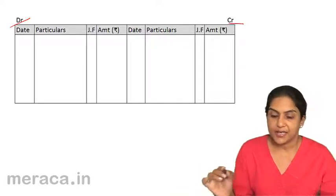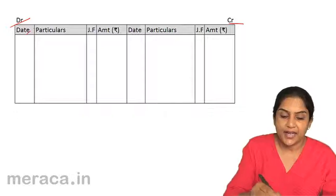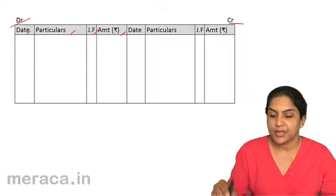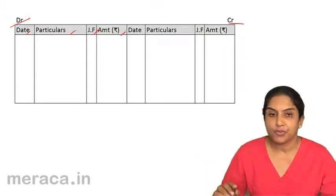This is the debit side, this is the credit side. Each side has a date, particulars, folio, journal folio and amount. Date, particulars, journal folio and amount.